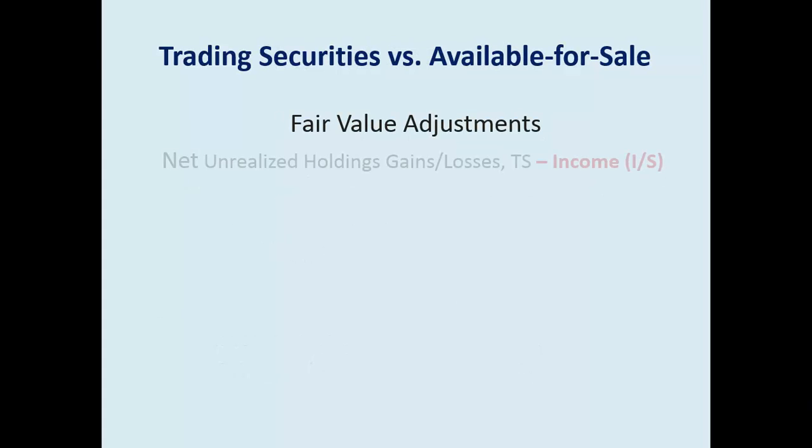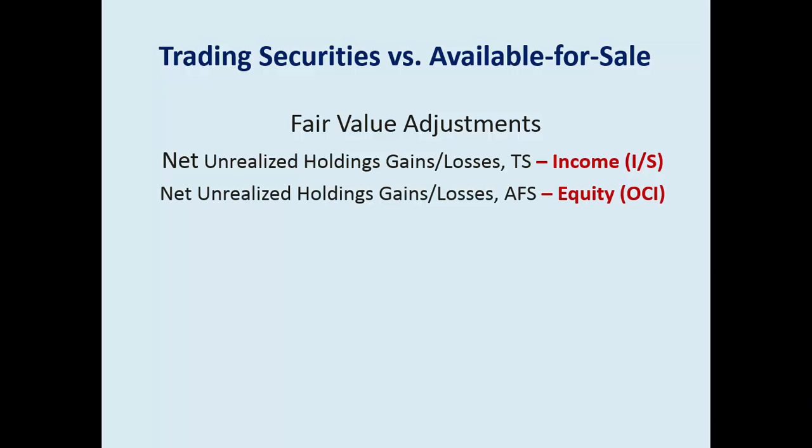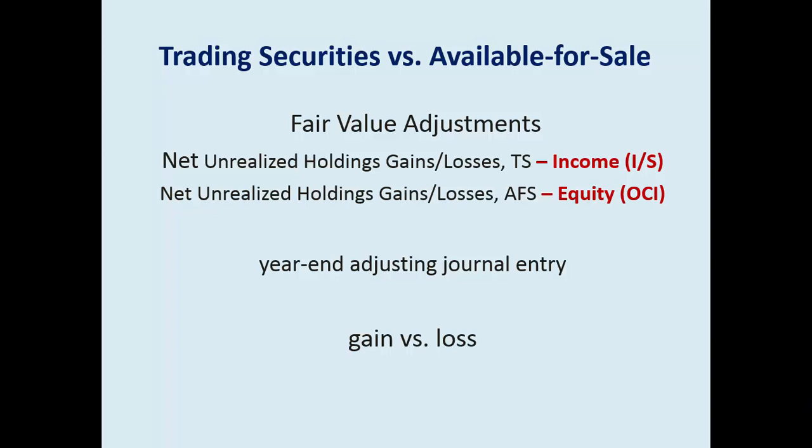For both trading and available for sale, you are required to do fair value adjustments. The difference is where you track them. For trading, fair value adjustments are recorded in income because trading happens so quickly it would end up in income anyway when you sell. For available for sale, you could hold it for a number of years, so we track fair value adjustments separately as a separate component of equity. This maintains historic cost while ensuring investment assets are valued correctly on the balance sheet — also part of full disclosure. Those fair value adjustments are year-end adjusting journal entries representing unrealized gains and losses, as opposed to realized gains and losses.